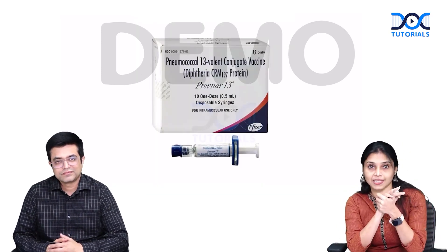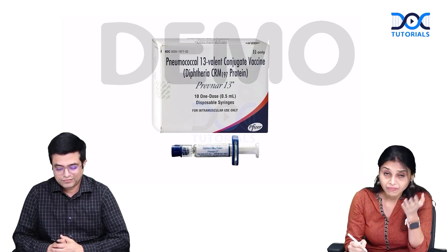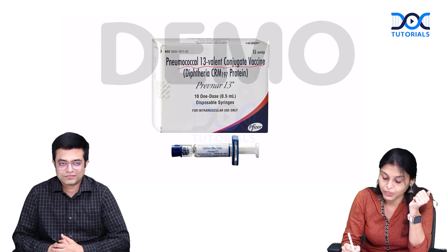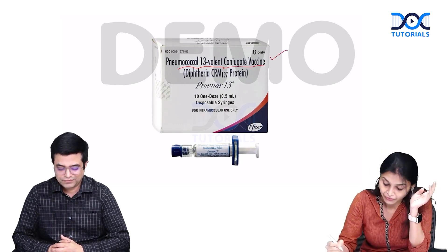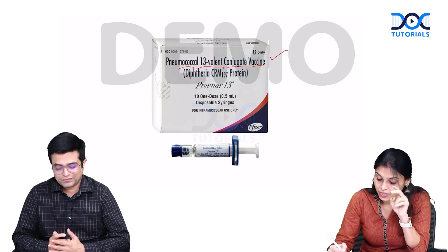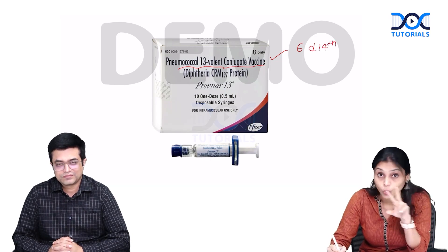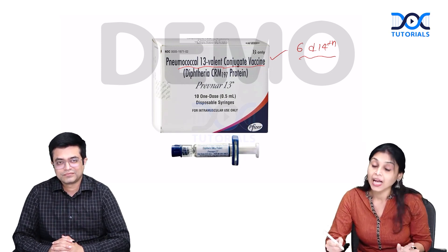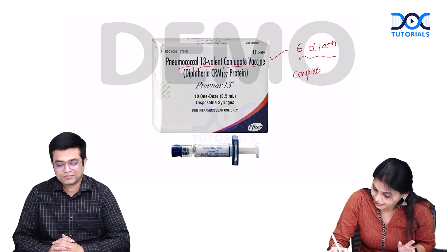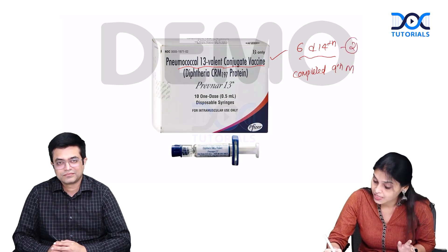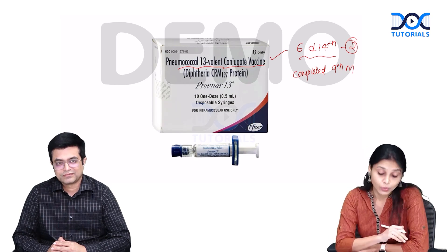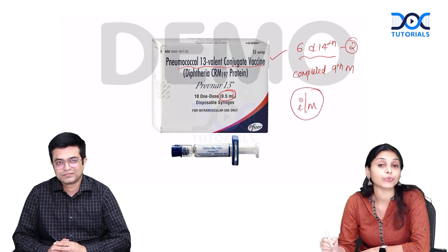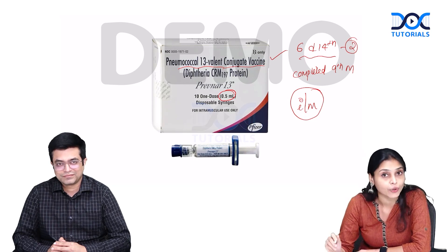The last vaccine in option B is PCV. PCV is pneumococcal 13 conjugate vaccine — we give PCV 13 for children, not PCV 23. The schedule consists of two primary doses on the 6th and 14th week — similar to IPV — followed by a booster dose at the end of the completed 9th month. The dosage is 0.5 ml given intramuscularly on the anterolateral part of the thigh.